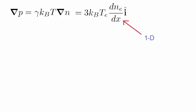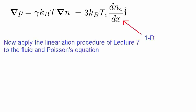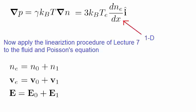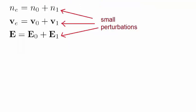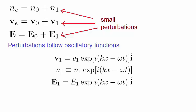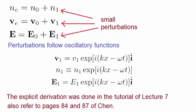Now apply the linearization procedure that was used in the last lecture to the Fluid and Poisson equations. We assume that the three parameters associated with density, velocity and electric fields have added onto them a small perturbation, given with the subscript 1. We also impose periodic functions to these perturbations. The explicit derivation was done in the tutorial of lecture 7, but can also be found on pages 84 and 87 of Chen.